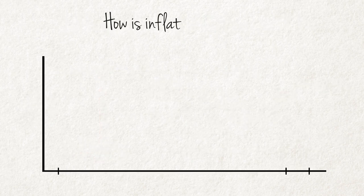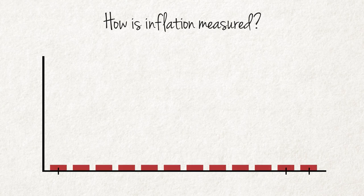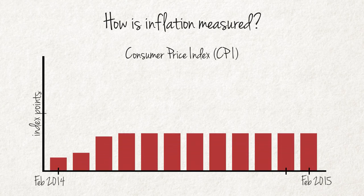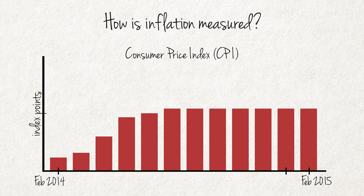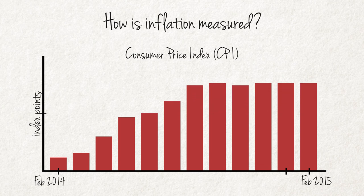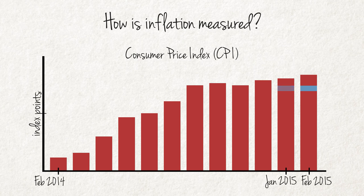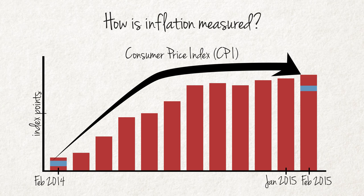How is inflation measured? The price level in South Africa is measured by means of the Consumer Price Index, or CPI, and the rate of change in the CPI is the rate of inflation. Although inflation can be calculated for any given period, the durations most often used are monthly — for example, the CPI index value for February 2015 on January 2015 — and annually — for example, the CPI index value for February 2015 on February 2014.